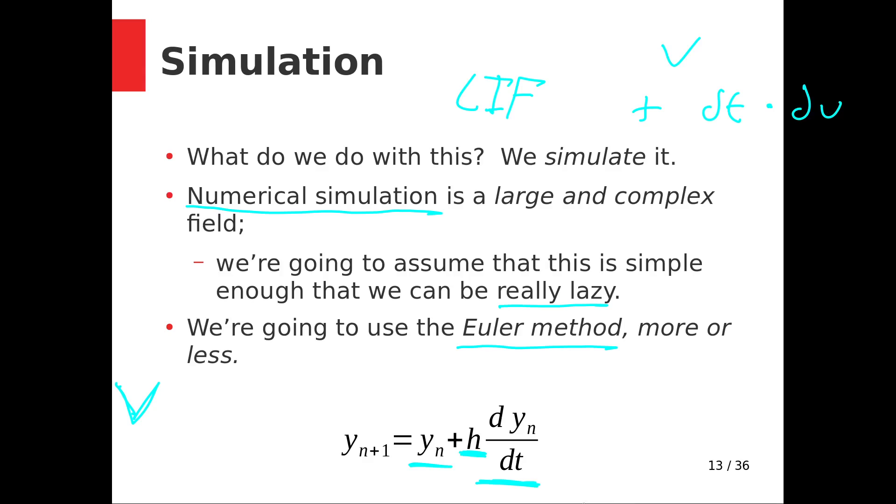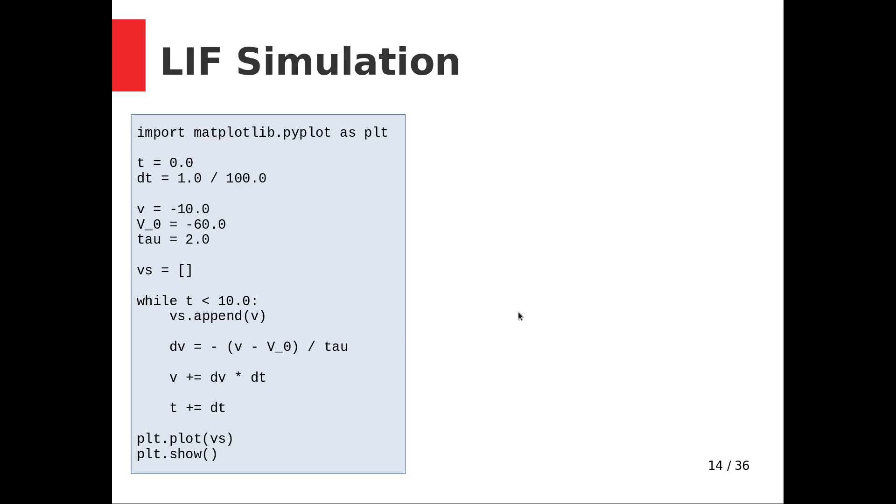We can fairly efficiently translate that into Python code. It ends up looking like this. I'm going to repeat very quickly that this kind of Euler method is not very sophisticated, and we get to get away with this because the LIF is very simple.